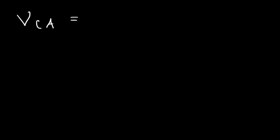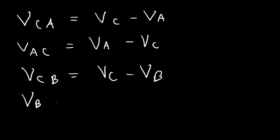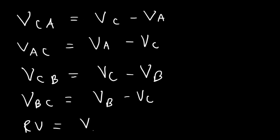Now if we want to define vca — that's the velocity of c with respect to a — you can calculate it by subtracting vc and va. If you want to find vac, that's the velocity of object a with respect to c, where c is the frame of reference, then this is going to be va minus vc. The velocity of object c with respect to b is vc minus vb, and the velocity of object b with respect to c is vb minus vc. So basically, relative velocity is just the difference between the velocity of the object minus the velocity of the frame of reference.